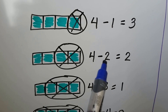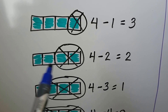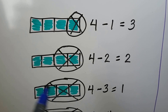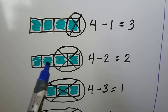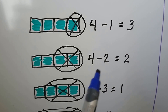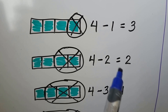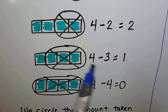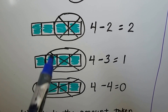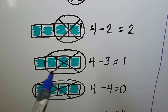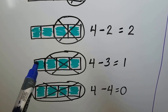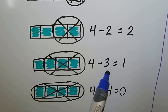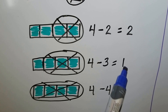If we take away two, we circle two and cross them out. We can see there's one, two left. Four minus two is equal to two. We take away three, we circle three, we cross it out. We can see there's one left. Four minus three is equal to one.